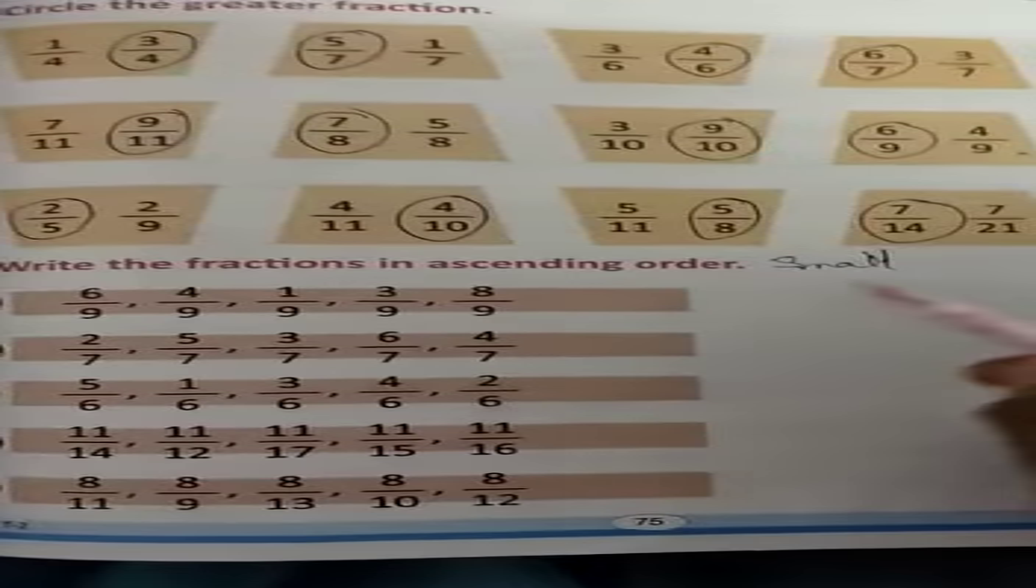Ascending order means arranging from small to big. When we have numbers, we know which numbers are small and which are big. But with fractions, we need to understand how to identify which fractions are small to big to arrange them in ascending order.